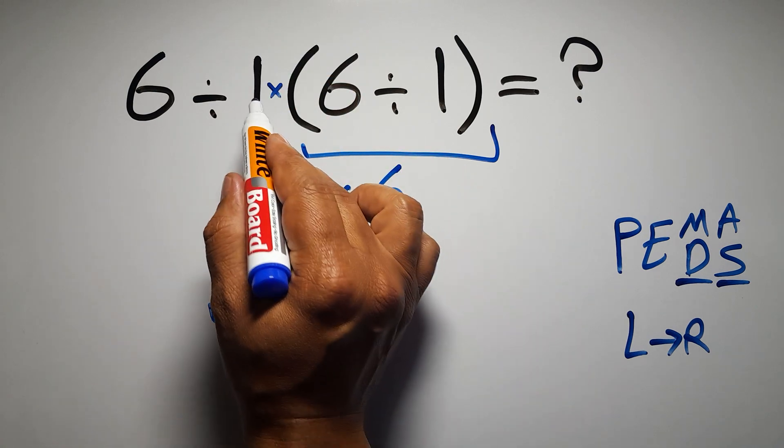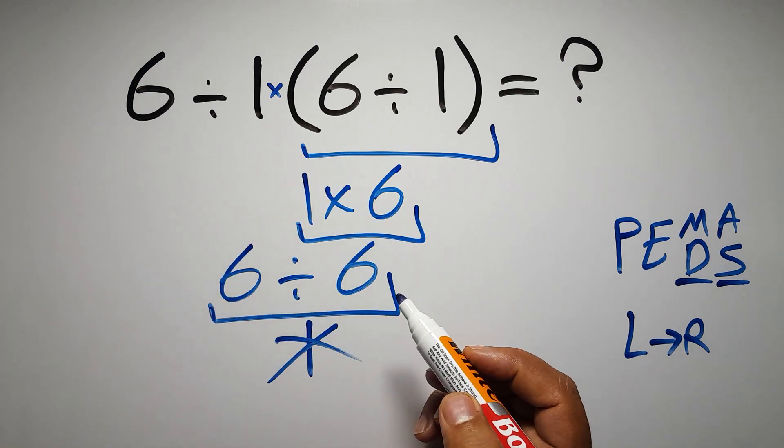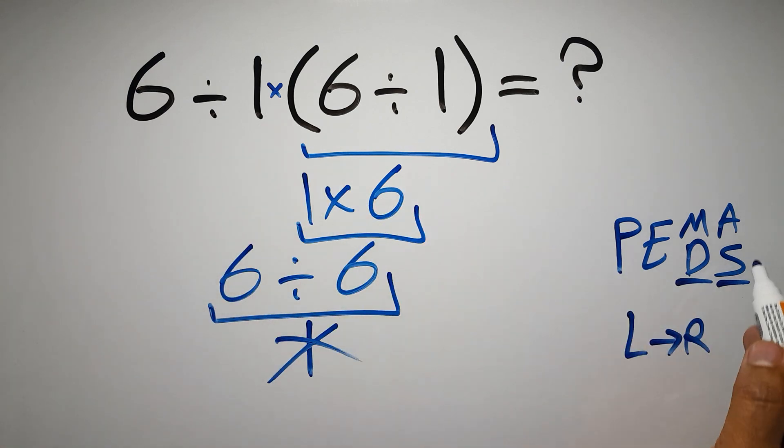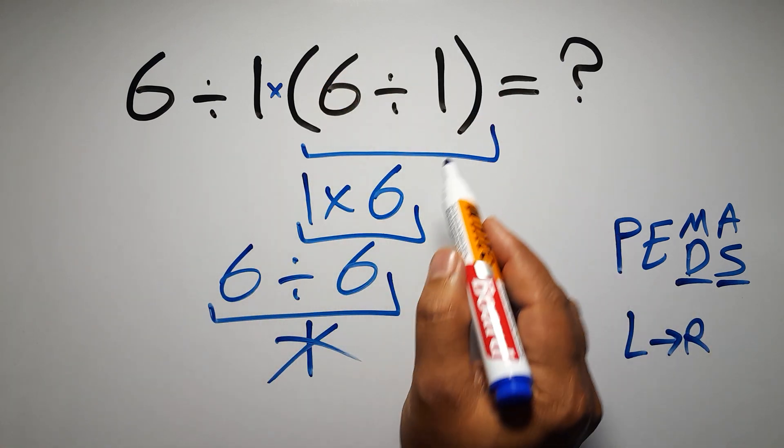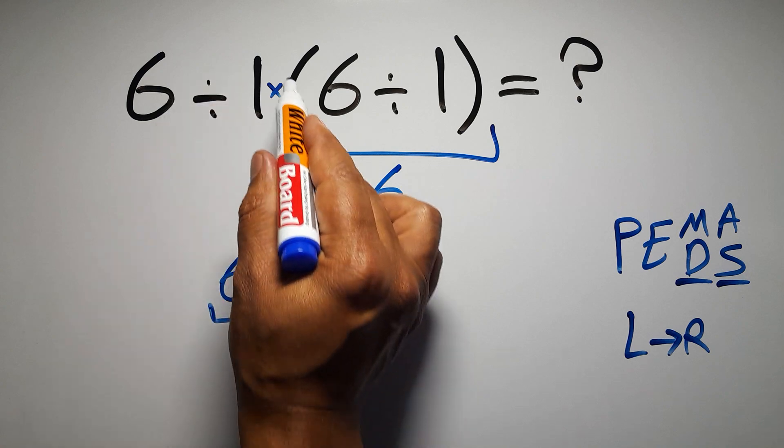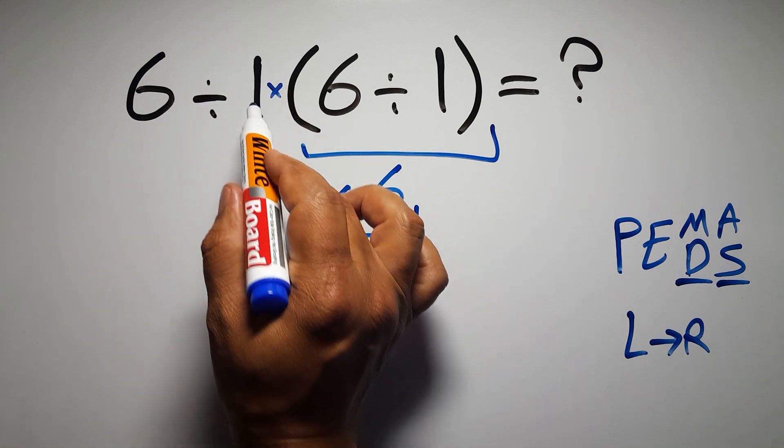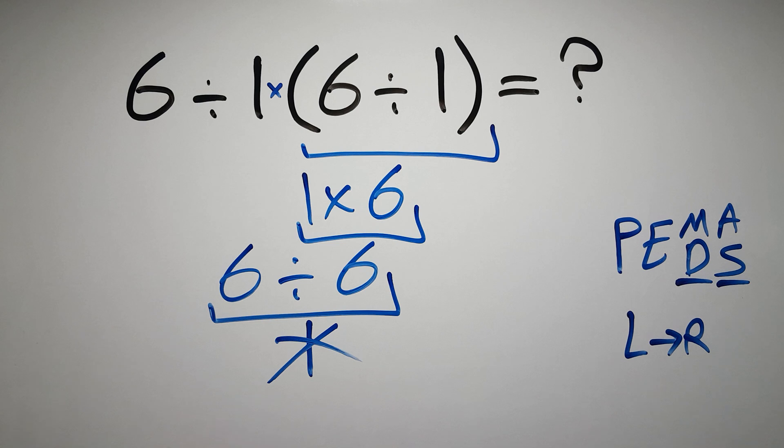And we usually don't write the multiplication sign for brevity. Okay, so according to PEMDAS, first we have to do this parentheses, then this division, and finally this multiplication. If we do this multiplication before this division it is wrong.